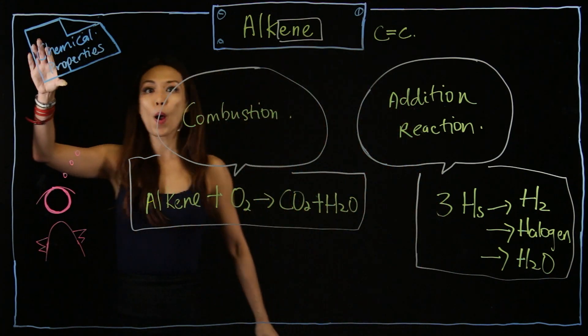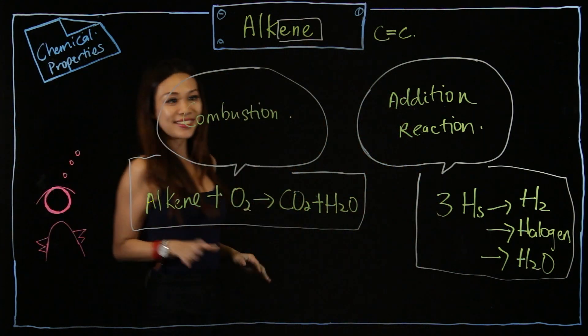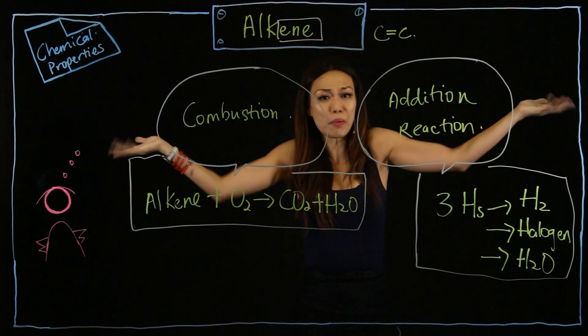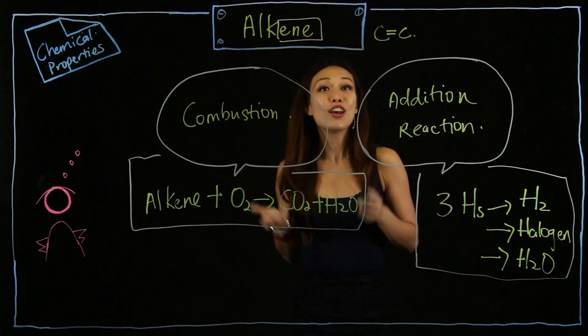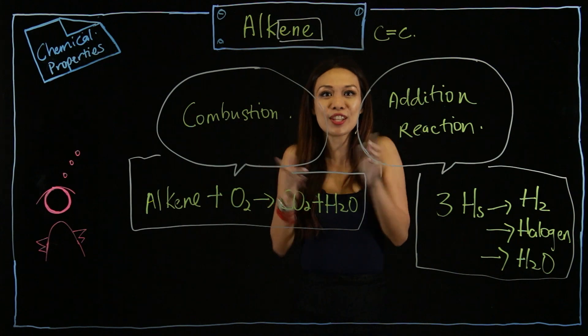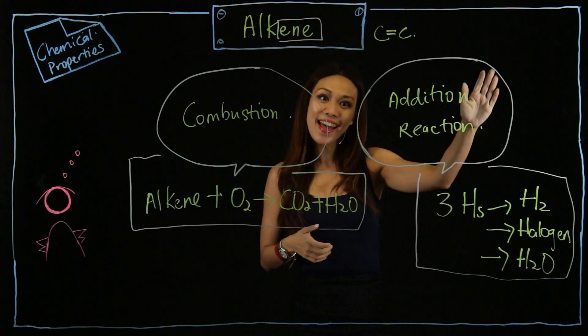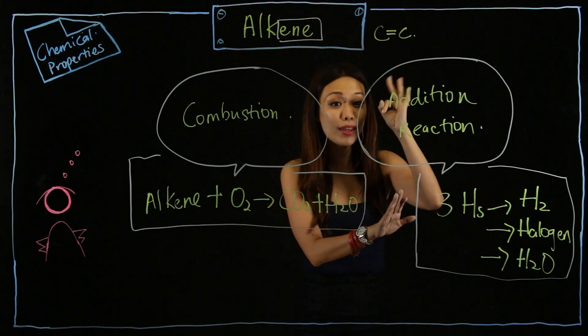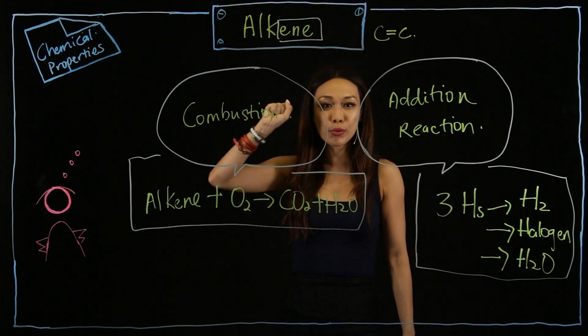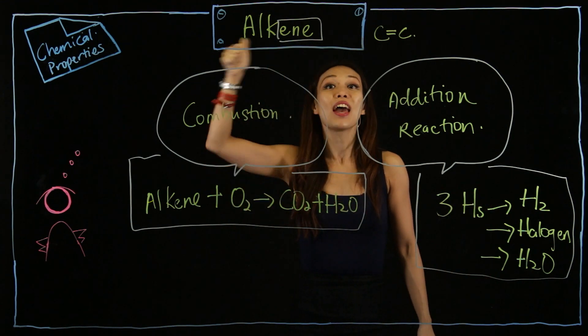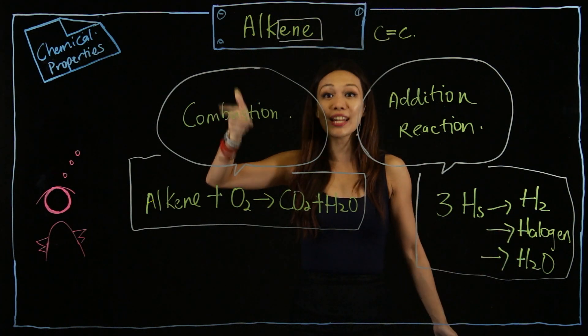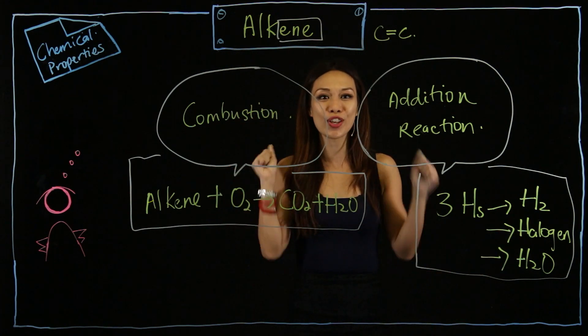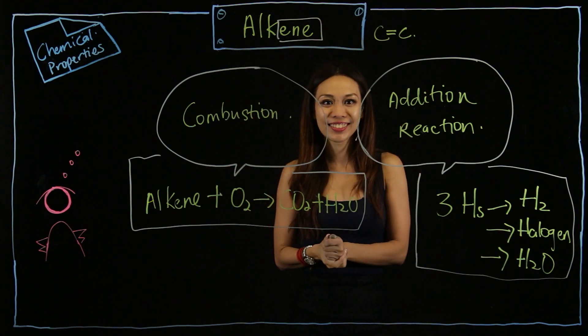Chemical properties for alkene: combustion which produces carbon dioxide and water, balance the equation using the Mr Chao method, and addition reaction with the three H. What are the three H? H2, halogen, and H2O.